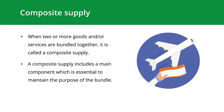The last category is composite supply. When two or more goods or services are bundled together, it's called a composite supply. A composite supply includes a main component which is essential to maintain the purpose of the bundle. For example, when you purchase an airline ticket, it often includes the cost of in-flight refreshment. The ticket is the main supply, as it wouldn't make much sense to sell just the food without the ticket.